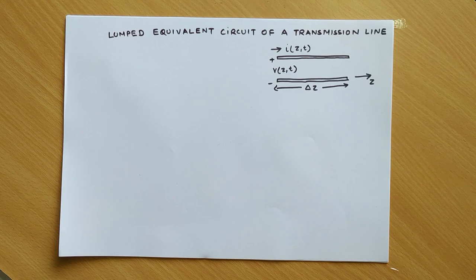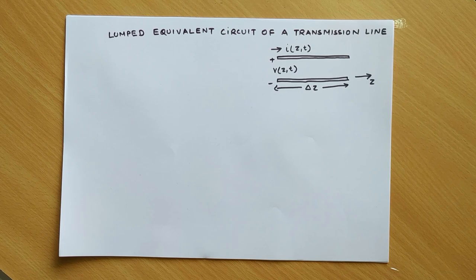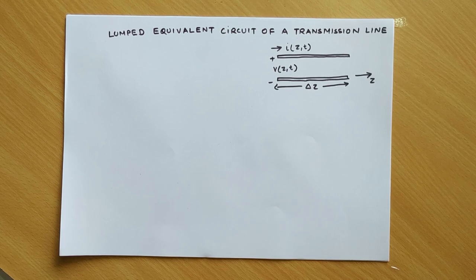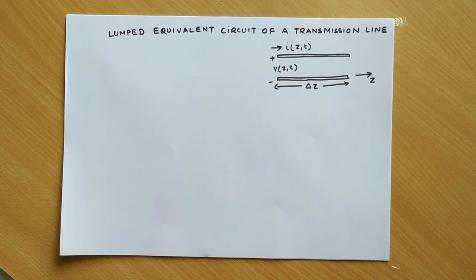In circuit analysis it is assumed that the physical dimensions of a network are much smaller than the electrical wavelength, while transmission lines may be a considerable fraction of a wavelength or many times the wavelength in size. Therefore a transmission line is a distributed parameter network where voltage and currents can vary in magnitude and phase over its length, while ordinary circuit analysis deals with lumped elements where voltage and currents do not vary over the physical dimension of the elements.